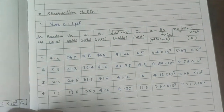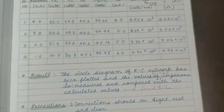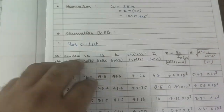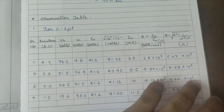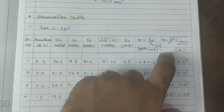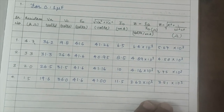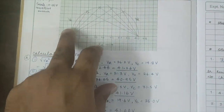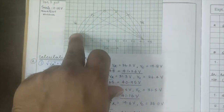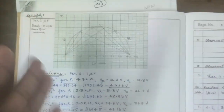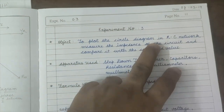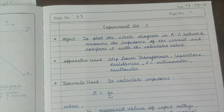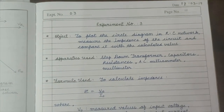In conclusion, we fix the capacitor value, vary the resistance, and measure VR, VC, E₀, and I₀. We calculate Z using both E₀/I₀ and the formula, compare the values, and confirm they match well. The circle diagram confirms that all four points lie very close to the semicircle, verifying the RC network behavior. We write up these results and conclusions.